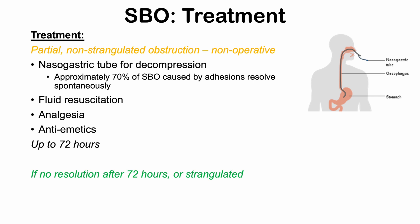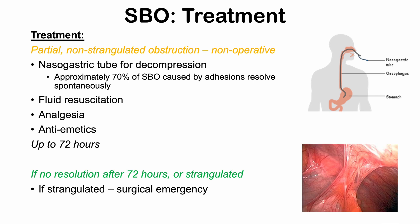If there is no resolution after 72 hours of non-operative management, or if there is a strangulated small bowel obstruction, the patient progresses to surgical intervention. A strangulated obstruction is a surgical emergency because blood flow to the bowel is compromised. Surgery is either open abdominal or laparoscopic and is used to remove whatever is obstructing the small bowel — most commonly adhesions, but also malignancy or other causes.